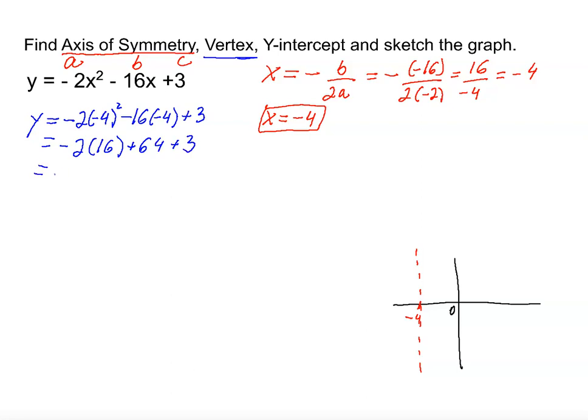And that equals negative 2 times 16, negative 32 plus 64 plus 3. That equals, let's do the calculations very fast. And that equals positive 35, so we have a 35.